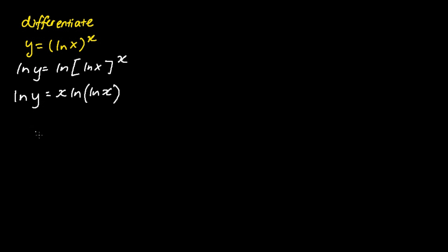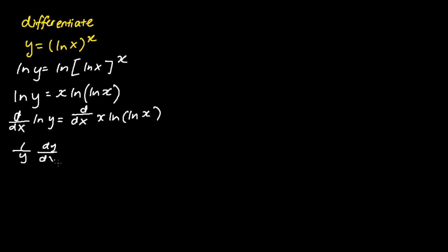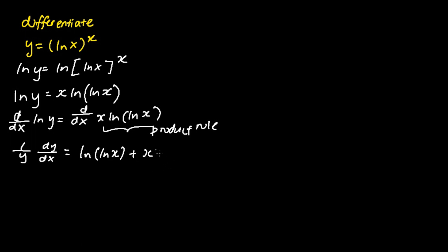We then apply implicit differentiation, differentiating with respect to x on both sides. On the left hand side, the derivative of ln y is (1/y)(dy/dx). On the right hand side, we apply the product rule: differentiating x gives 1 times ln(ln x), plus x times the derivative of ln(ln x), which is (1/ln x)(1/x).